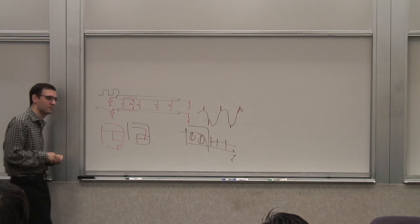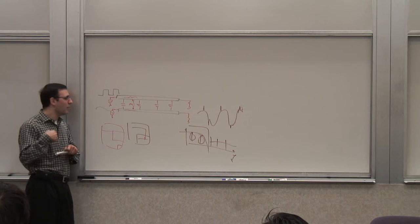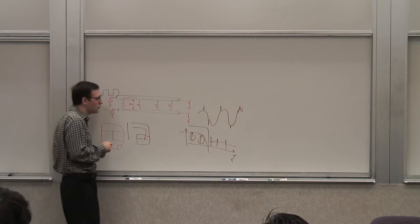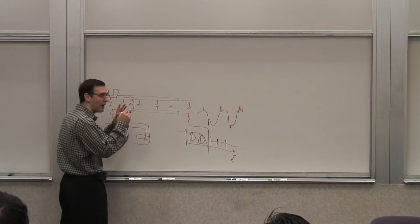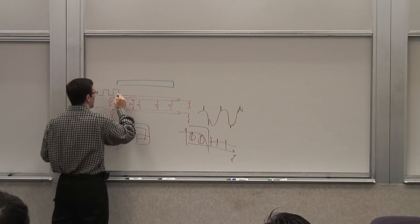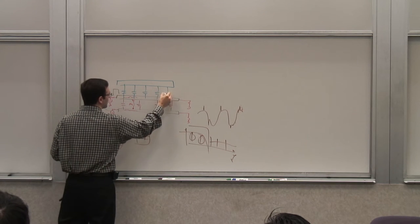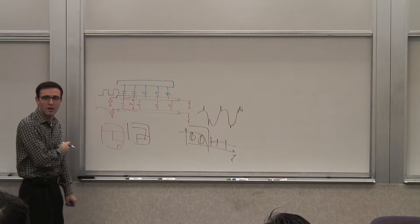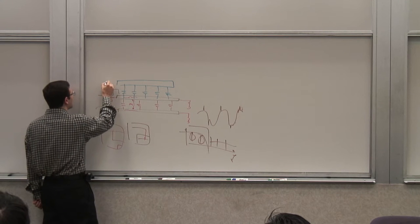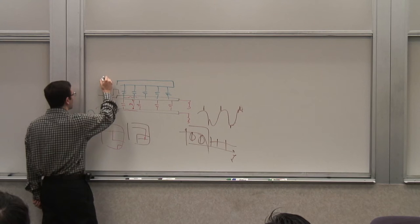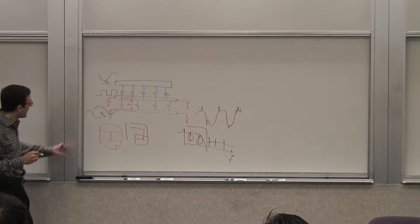Now, what else can we do? One of the tricks is to use differential signaling. The idea is: if I could have another line on one side that was exactly the same distance from the clock line, and if this line carries V_in and the other carries minus V_in — so if this is a sine wave, the other would be minus that same sine wave, 180 degrees out of phase — what happens?